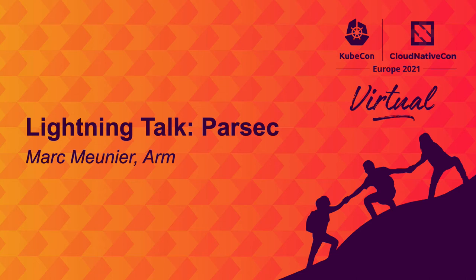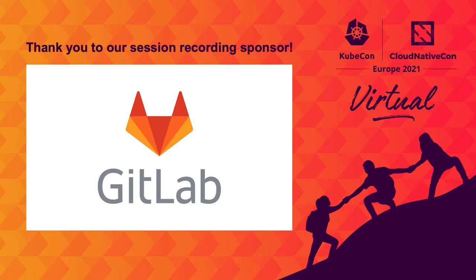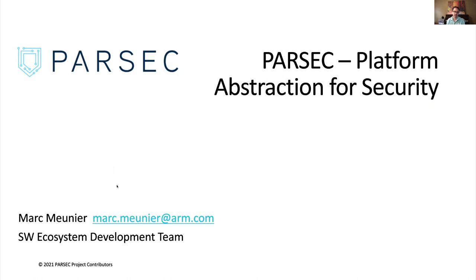Hello, everyone. My name is Marc Meunier, and I work for ARM as part of the infrastructure line of business focused on software ecosystem development with a special interest in security projects. I basically work with partners to promote security advancements at the edge and in the cloud, and I represent ARM at the Board of Governance at the Confidential Computing Consortium.